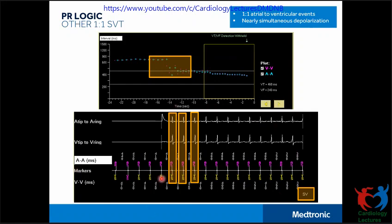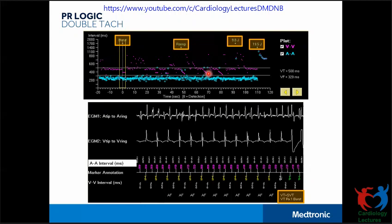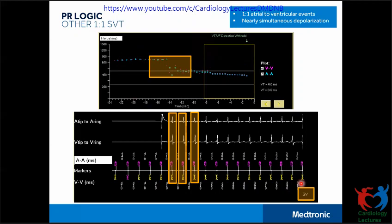The 'Other 1:1 SVT' feature identifies other 1:1 SVTs where atrial and ventricular activation occurs simultaneously, for example junctional rhythms such as AV nodal reentrant tachycardia. In this case, atrial and ventricular depolarization happen almost simultaneously. The device looks at this pattern. In the plot, initially the rhythm was 1:1, but there was an abrupt change in rate — both atrial and ventricular rates abruptly changed going into the VT zone, still following a 1:1 pattern.